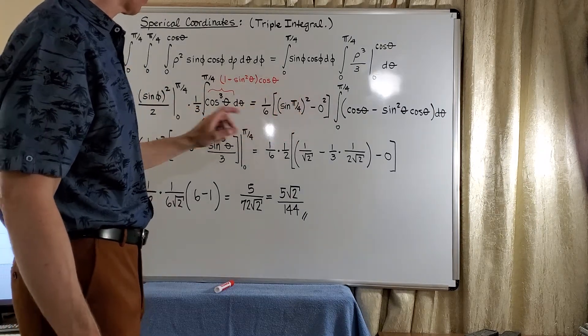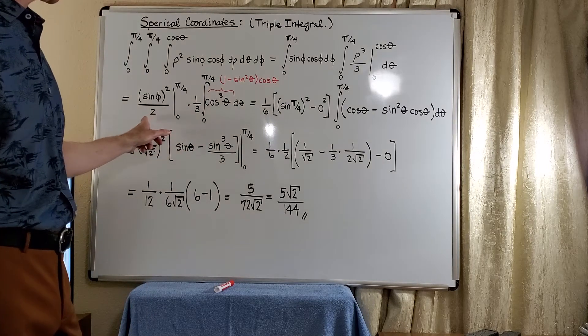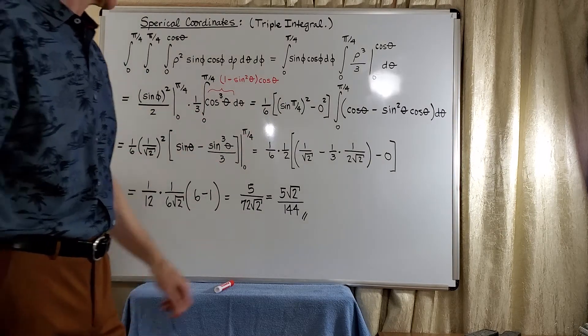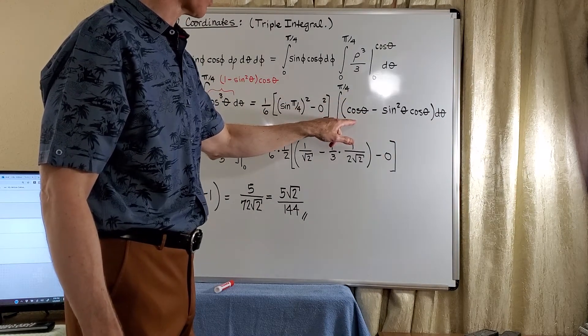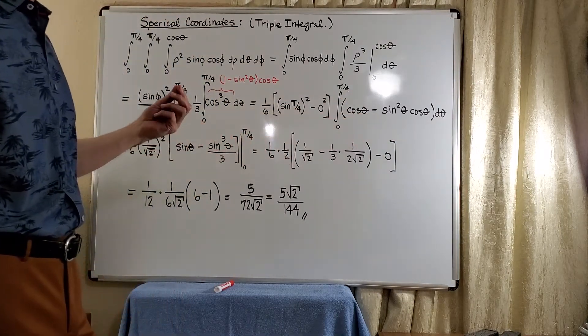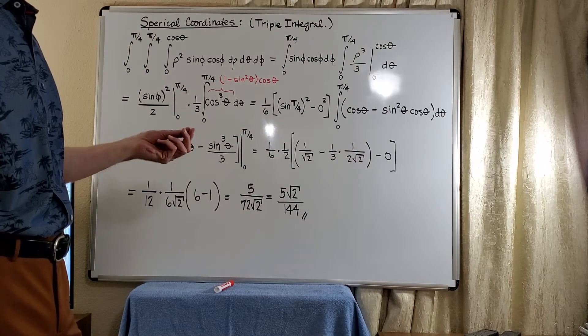So here, this is very simple. And we multiply the 1 third and the 1 half and get 1 sixth. Now, when we look at this portion here, easy antiderivative, we have that the antiderivative of cosine is sine.